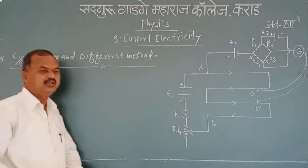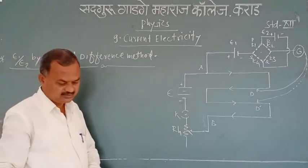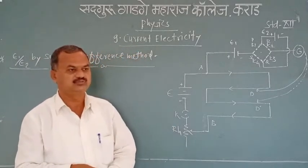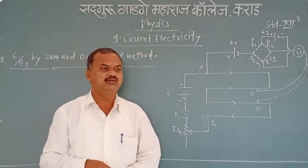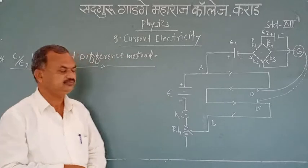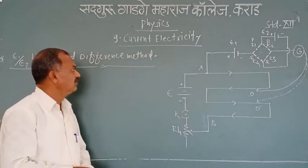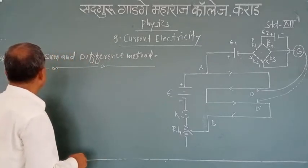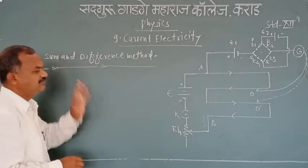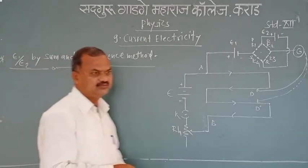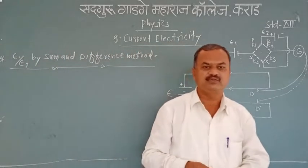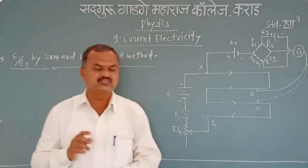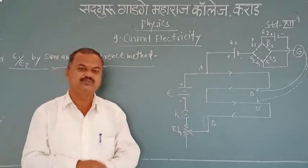In this lecture, we will study the next, second use of potentiometer: E1 divided by E2 by the sum and difference method — that means, comparison of EMFs of two given cells by the sum and difference method.